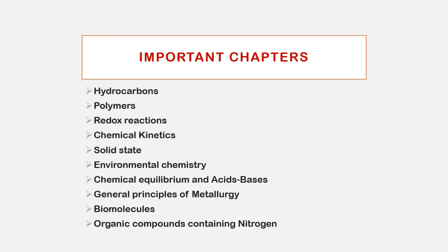The next chapter is General Principles of Metallurgy. This is a theory-based chapter covering types of metallurgical processes, alloy preparation, and composition of elements.